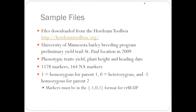The marker set had 1,178 markers and 164 of those markers are NA, and we'll go through with imputation what to do with these NA markers. The data set was also in the format that's needed for the rrBLUP package, and this is that the markers must be in the negative one, zero, or one format. So, the one is the SNP for the homozygous parent 1, zero is heterozygous, and negative one is homozygous SNP for parent 2.